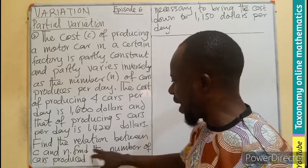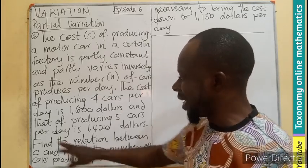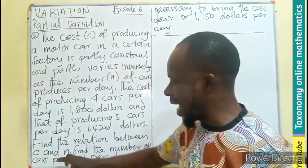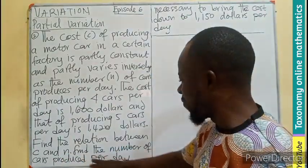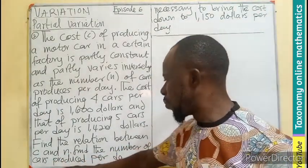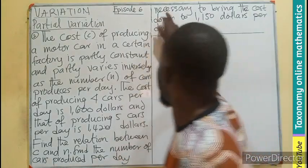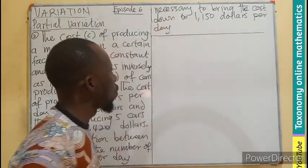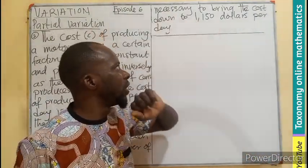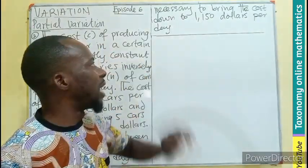We have to find the relation between C, which is the cost, and N, the number. And hence find the number of cars produced per day necessary to bring the cost down to $1,150 per day.